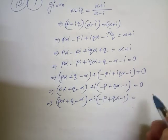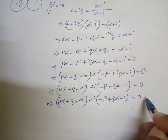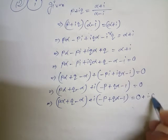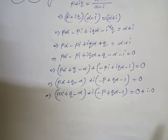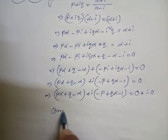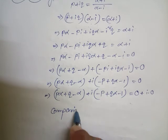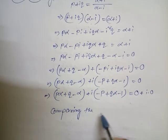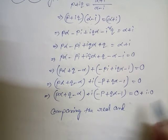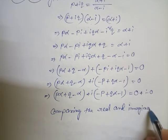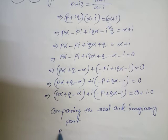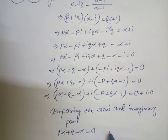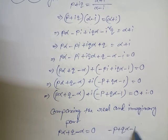This is in a + ib format, equal to 0 + i·0. Comparing both the real and imaginary parts on both sides: the real part gives pα + q - α = 0, and the imaginary part gives -p + qα - 1 = 0.